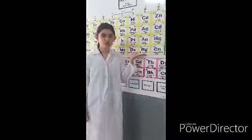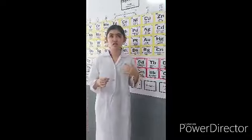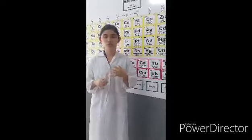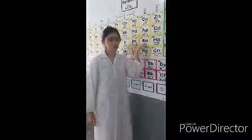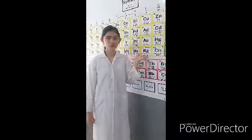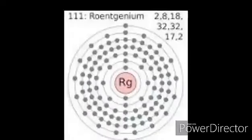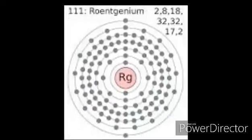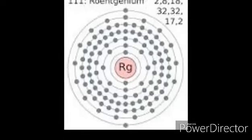Roentgenium is a radioactive element, and it is named after Wilhelm Conrad Roentgen. He is the one who discovered X-rays. Unlike copper, silver, and gold, Roentgenium is a synthetic element. You need to use nickel and bismuth to make this element. According to the Institute for Heavy-Ion Research in Germany, Roentgenium is a super-heavy element.